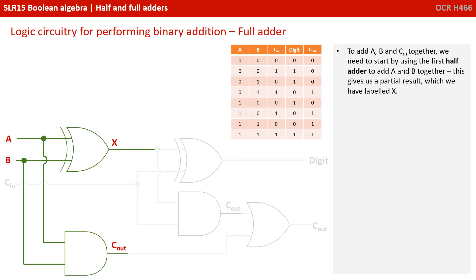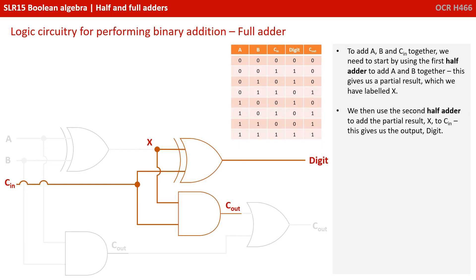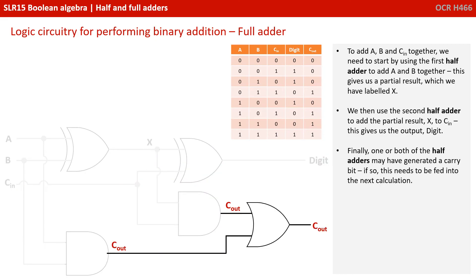Let's make sure you fully understand how this circuit works. To add A, B and CIN together, we first need to start by using the first half-adder to add A and B together. This gives us a partial result, which we've labelled X. We then use the second half-adder to add the partial result X to any carry-in, to give us the output digit. Finally, one or both of the half-adders may have generated a carry bit, and if so, this needs to be fed into the next calculation.